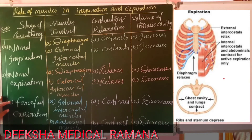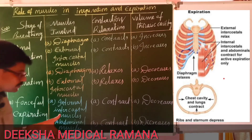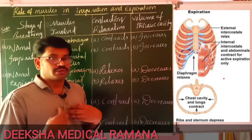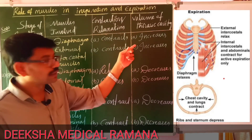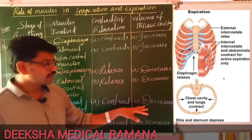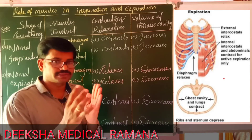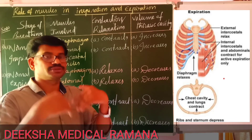The last event is forceful expiration. Whenever we change our strength of expiration, there are two important muscles involved: internal intercostal muscles and abdominal muscles. These two muscles contract during forceful expiration. During contraction, the volume of the thoracic cavity decreases — even more than in normal expiration. Whenever the thoracic cavity volume decreases, the pulmonary cavity also decreases. Whenever the pulmonary cavity decreases, pressure increases compared with atmospheric pressure, so air rushes from the lungs to atmosphere.